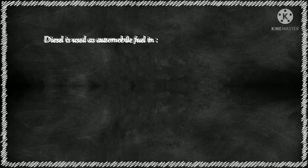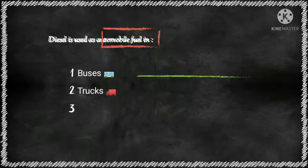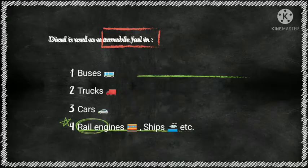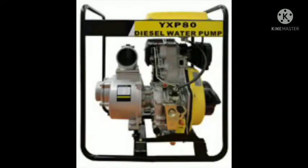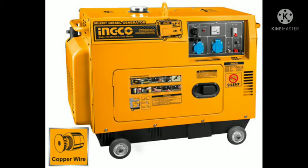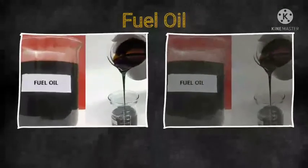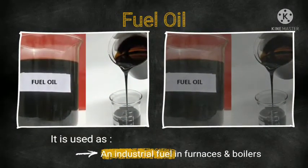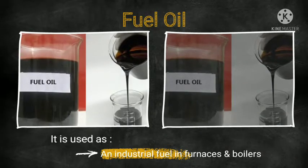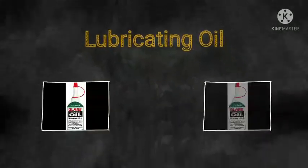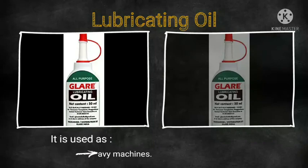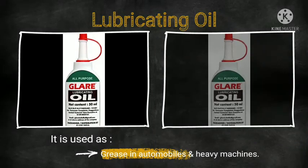Fourth, diesel oil is used as an automobile fuel in buses, trucks, cars, rail engines, ships, etc. It is also used in water pumps to pump out water and in diesel generators to produce electricity. Fifth, fuel oil is used as an industrial fuel in furnaces and boilers. Sixth, lubricating oil is used as grease in automobiles and heavy machines.